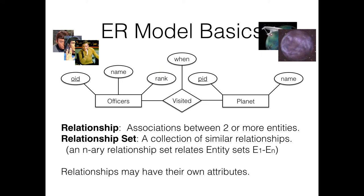Just like we can have entities, we can have relationships between different entities. We might have the idea that a particular officer visited some planet at some point in the past — this is a relationship between the officer and the planet. Just like we have sets of entities, we can have sets of relationships. Kirk visited Vulcan would be one specific relationship, whereas the set of all officers who visited whichever planets they visited is a relationship set.